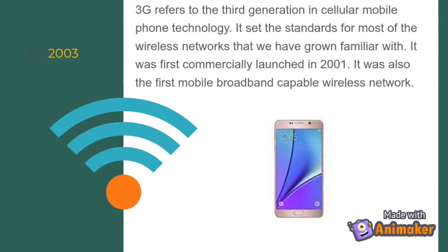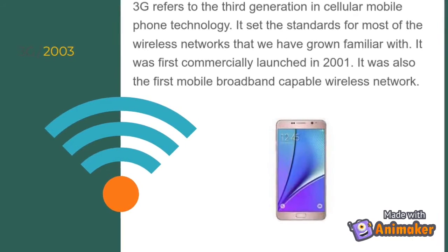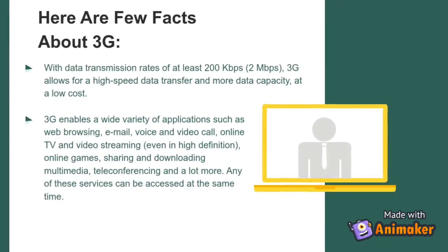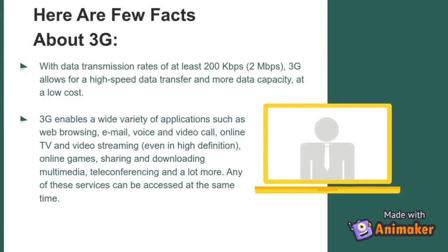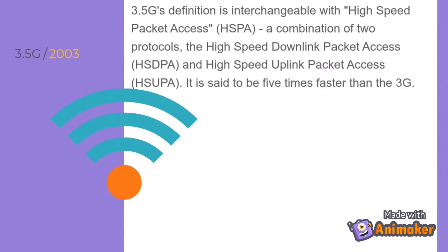3G refers to the third generation in cellular mobile phone technology. It set the standards for most of the wireless networks we have grown familiar with, and was first commercially launched in 2001. It was also the first mobile broadband-capable wireless network. With data transmission rates of at least 200 Kbps to 2 Mbps, 3G allows for high-speed data transfer and more data capacity at a low cost. 3G enables a wide variety of applications such as web browsing, email, voice and video calls, online TV, video streaming, online games, multimedia sharing and downloading, and teleconferencing.